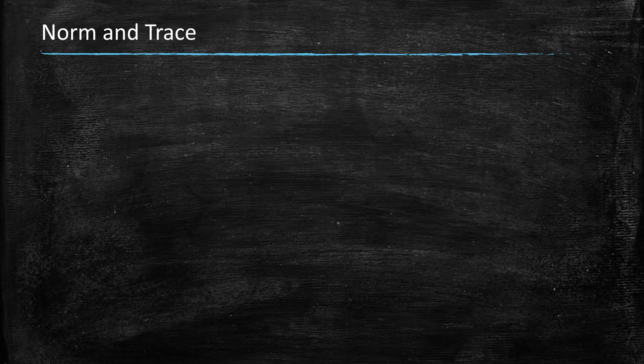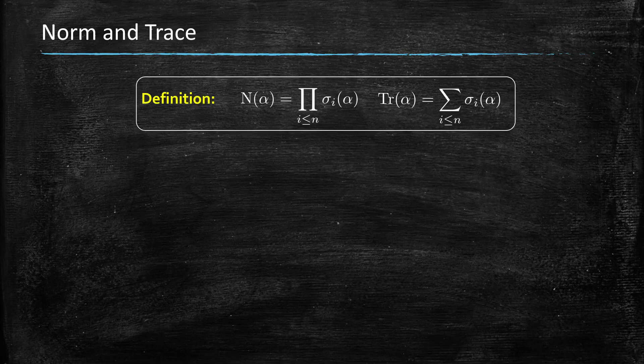So first properties that we look at and we'll need when we study classical algorithms is norm and trace. So first we start in this lecture to only talk about the norm and trace of elements.